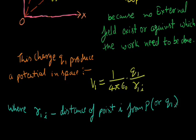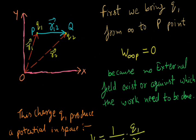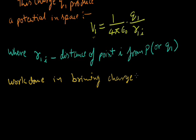Now if we are bringing the next charge Q2 from infinity to this point, then how much work are we doing? Because there is existing potential, there is existing field, so we will work against this field. Work done in bringing charge Q2 from infinity...